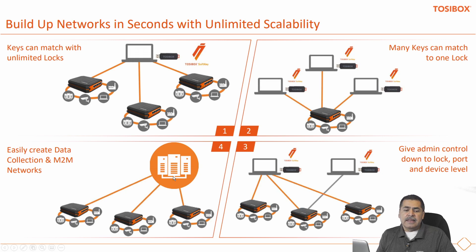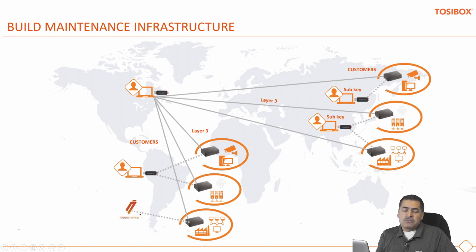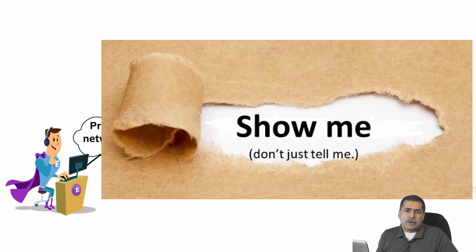With a server lock you can maintain a constant connection for data collection or machine-to-machine networks. Here's an example of a maintenance infrastructure: in North America, one key can access multiple locks, with sub-keys allowing others to access those same locks. Down in South America, additional keys access those locks as well. There's also a soft key — a virtual key that can be emailed to someone and reused on a different lock.